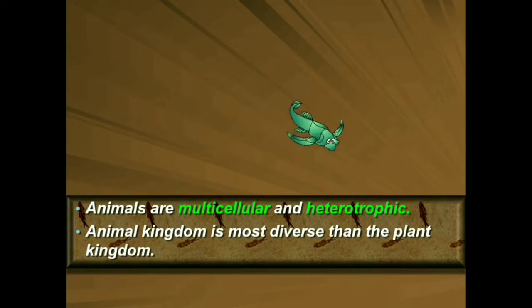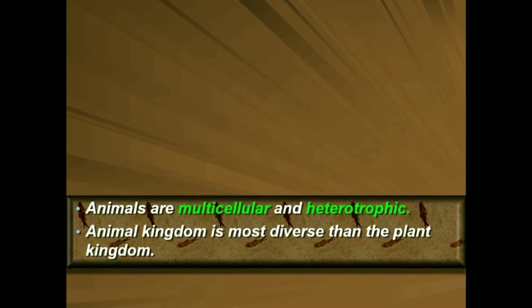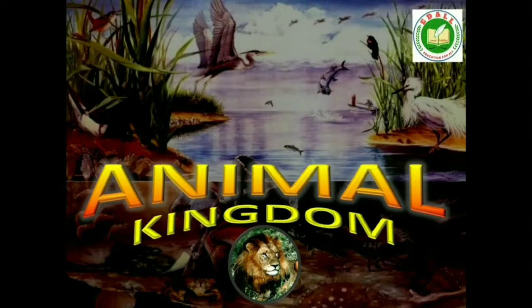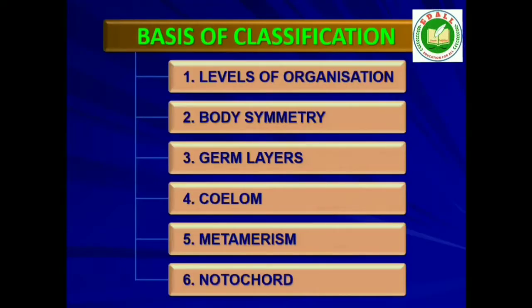The classification also helps in assigning a systematic position to newly described species. 4.1 Basis of Classification: In spite of differences in structure and form of different animals, there are fundamental features common to various individuals in relation to the arrangement of cells, body symmetry, nature of coelom, patterns of digestive, circulatory or reproductive systems. These features are used as the basis of animal classification.